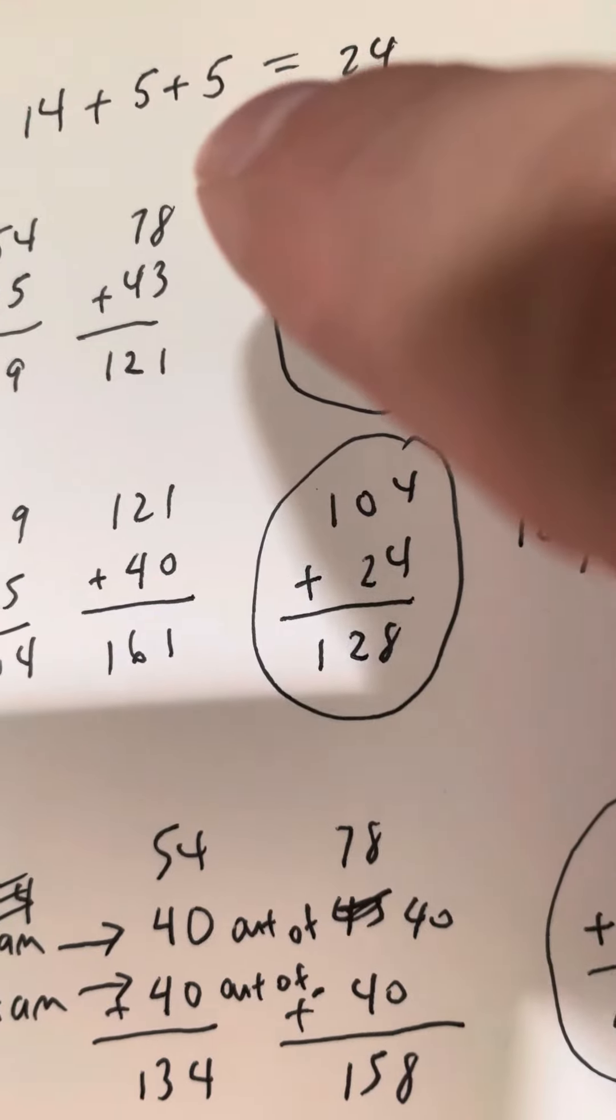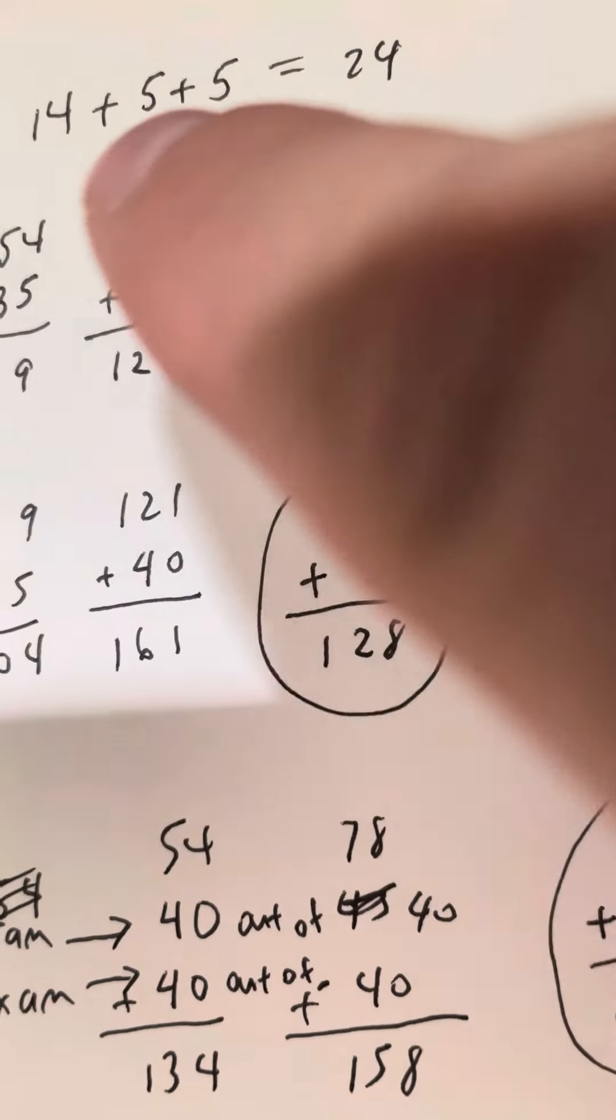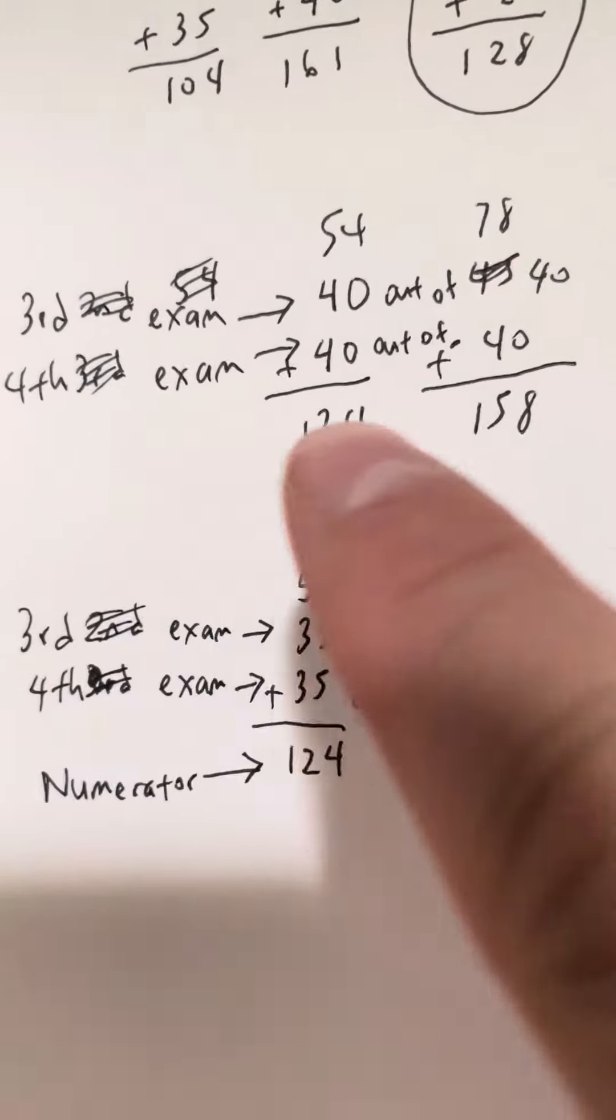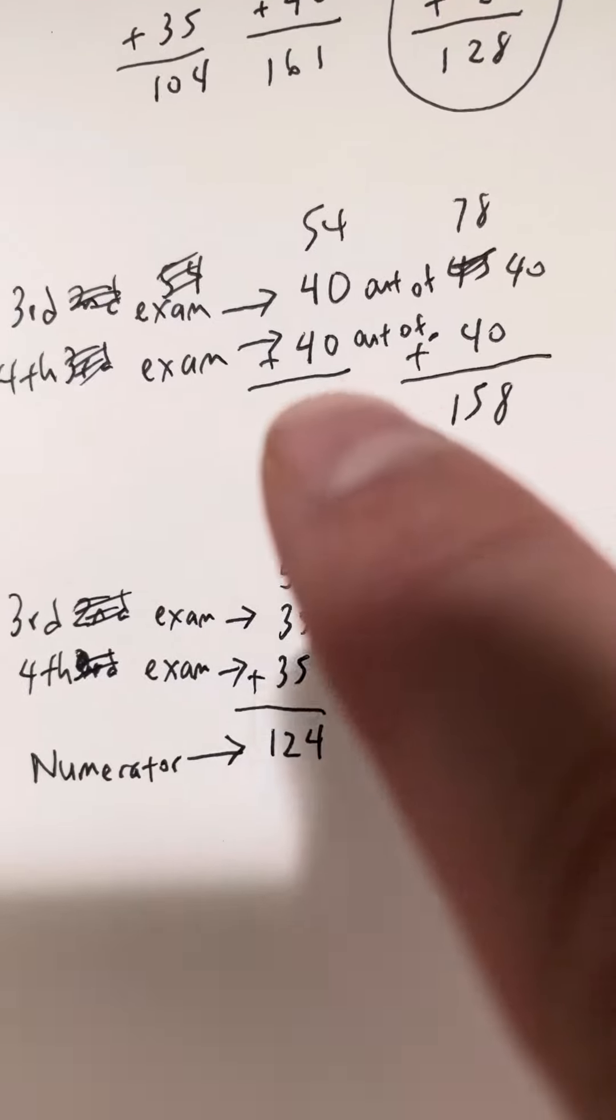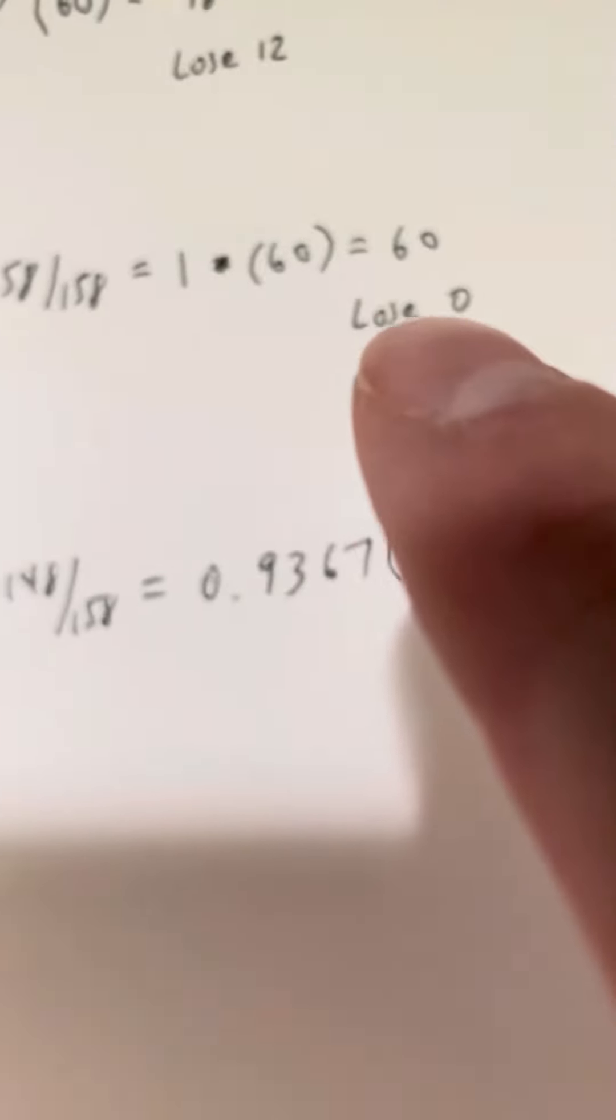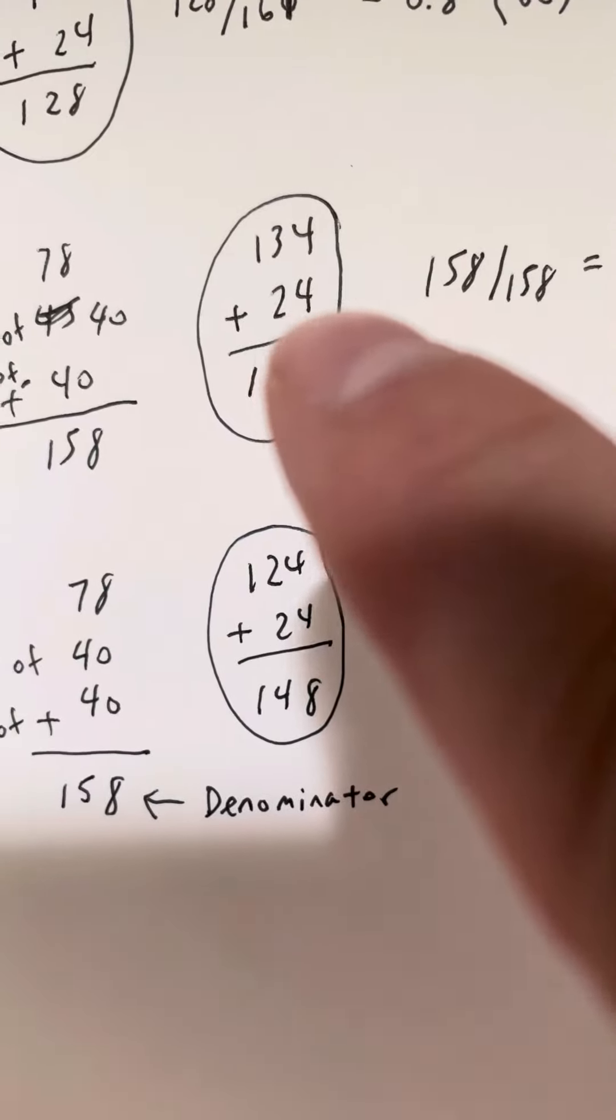So 14 plus 5 plus 5 is 24. I'll go over here. If on the third exam I make it 40 out of 40—I don't think so, but hypothetically—then that would be, I would have the 24 points plus 134 from the exam, and I'd be 158.